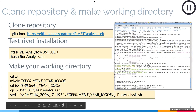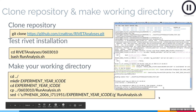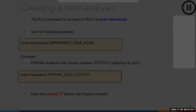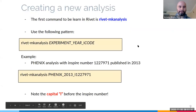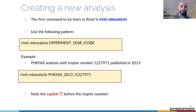Running 'rivet-mkanalysis' with your analysis name — for example 'rivet-mkanalysis PHENIX_2013_INSPIRENUMBER' — will create files. It creates four files if your data is already on HEPdata, but for most analyses that's not the case, so it will create three files. If your analysis is not yet on HEPdata, you need to get your data from the sandbox. You download the data by selecting YODA format from HEPdata, extract the tarball, then use the sed command to change 'RIVET_ANALYSIS_NAME' in the YODA file to your analysis name (EXPERIMENT_YEAR_ICODE).